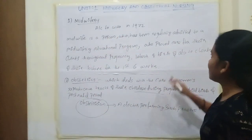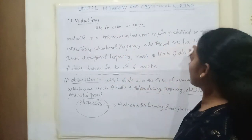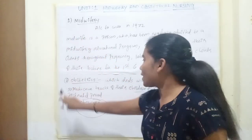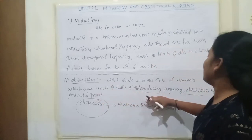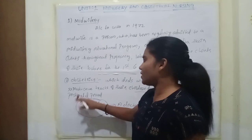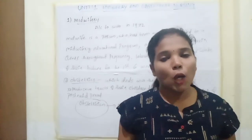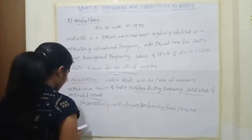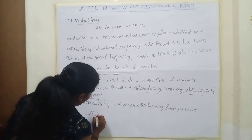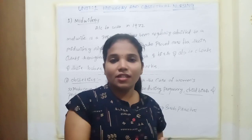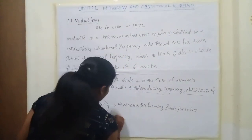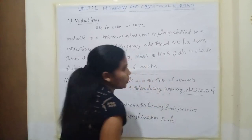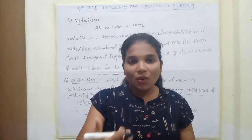So to summarize: midwifery is the person who provides care throughout pregnancy, labor, and birth including the first six weeks. Obstetrics covers care of the reproductive tract and child during pregnancy, childbirth, and postnatal period. Now, what is LMP? LMP stands for Last Menstruation Period - the last menstruation date. LMP is very important during pregnancy because from that date we count the days of pregnancy.